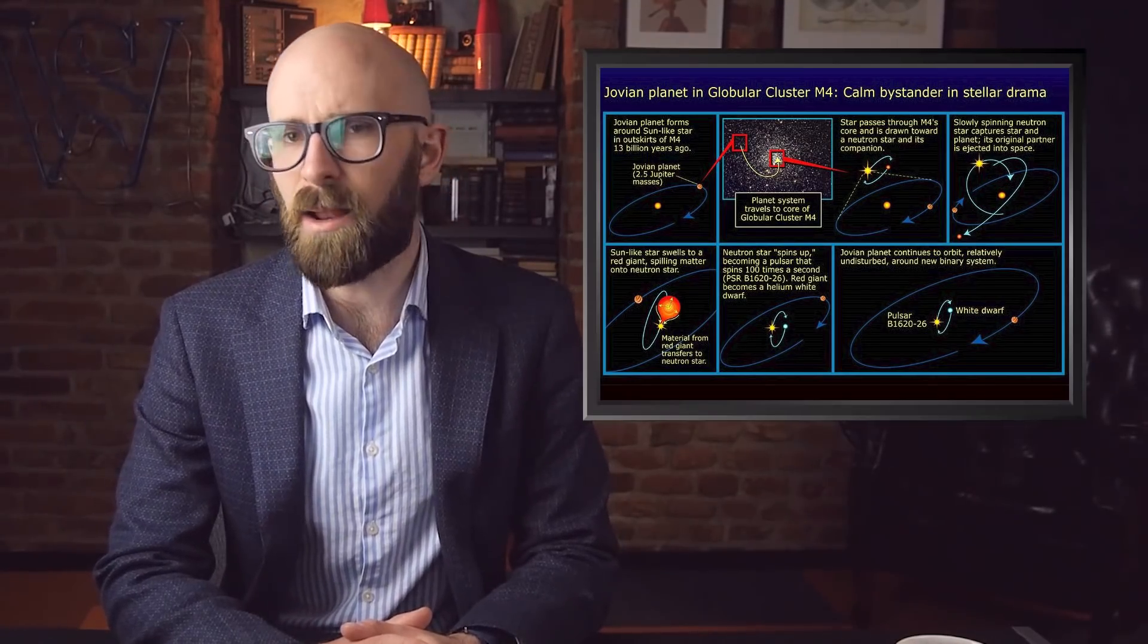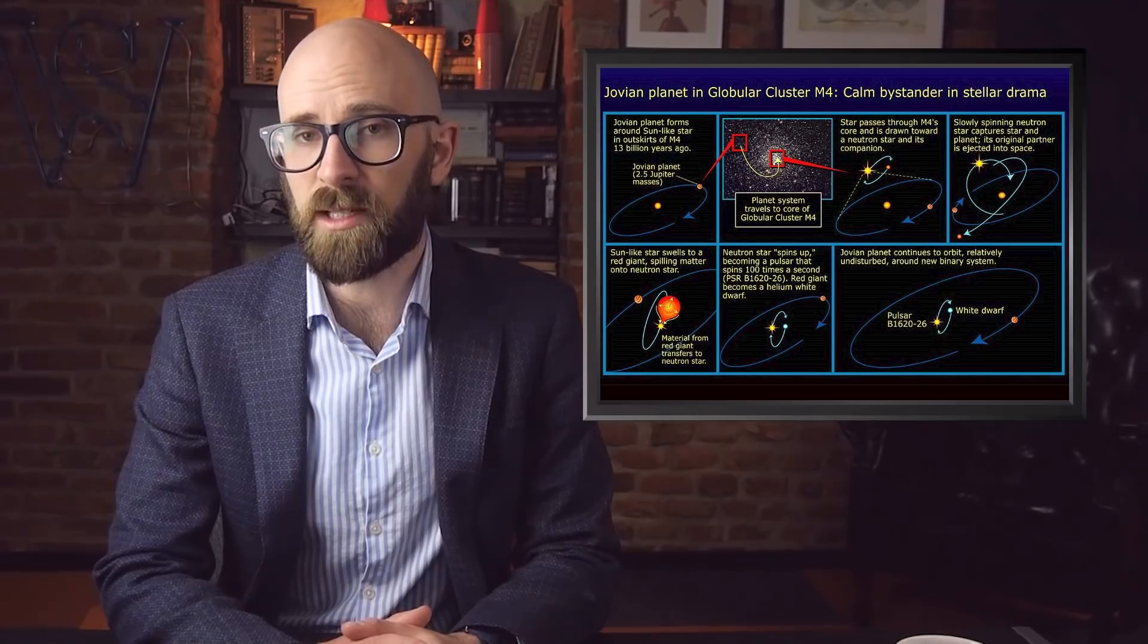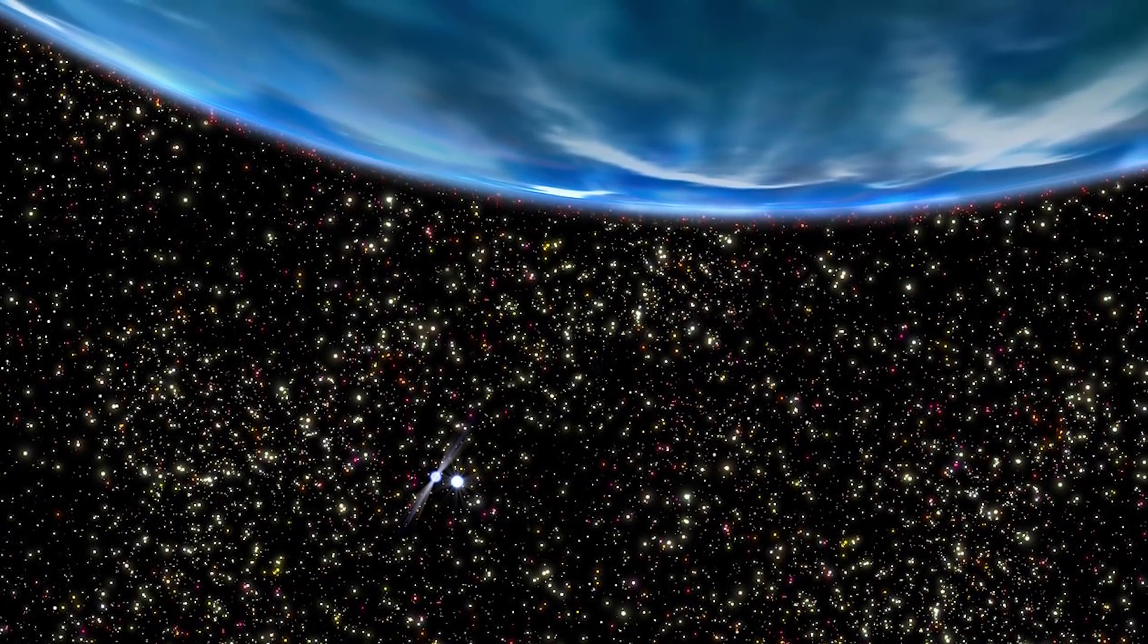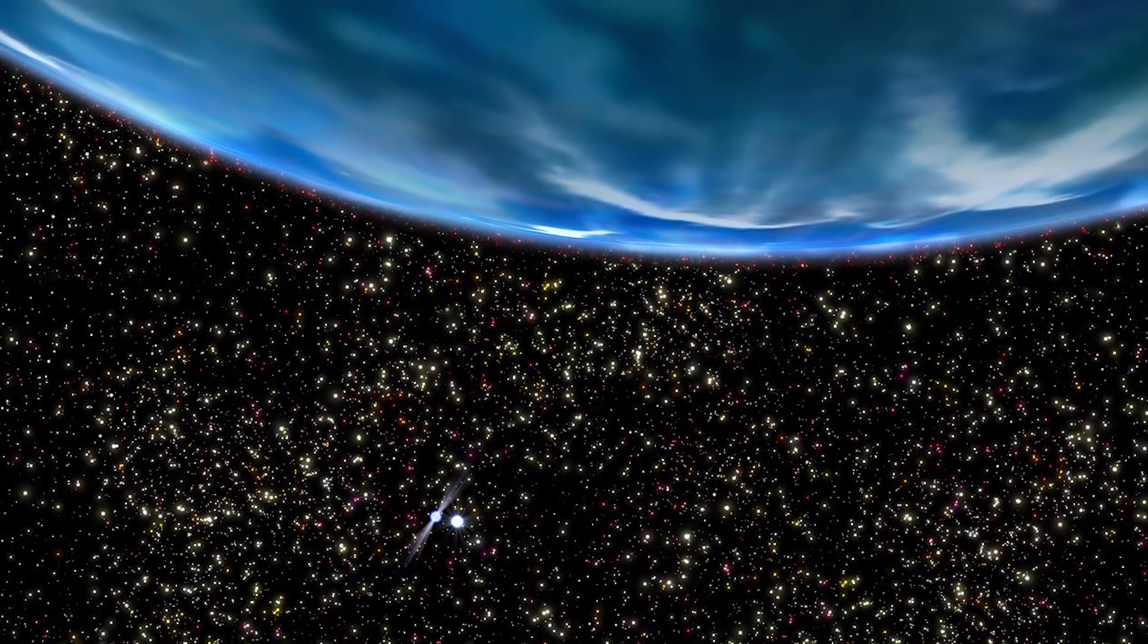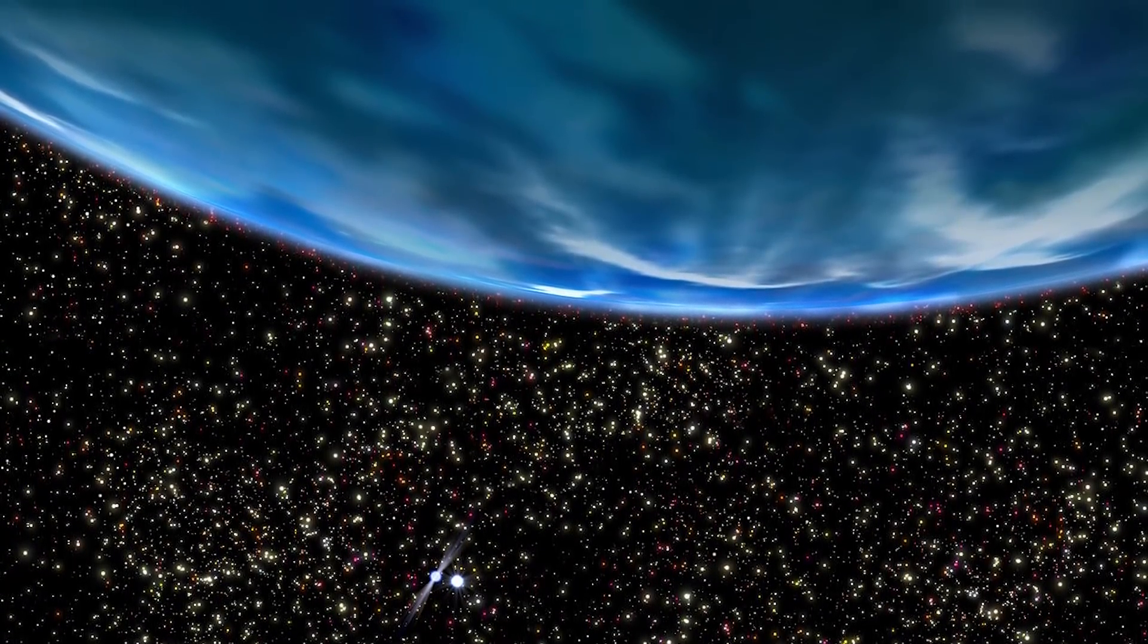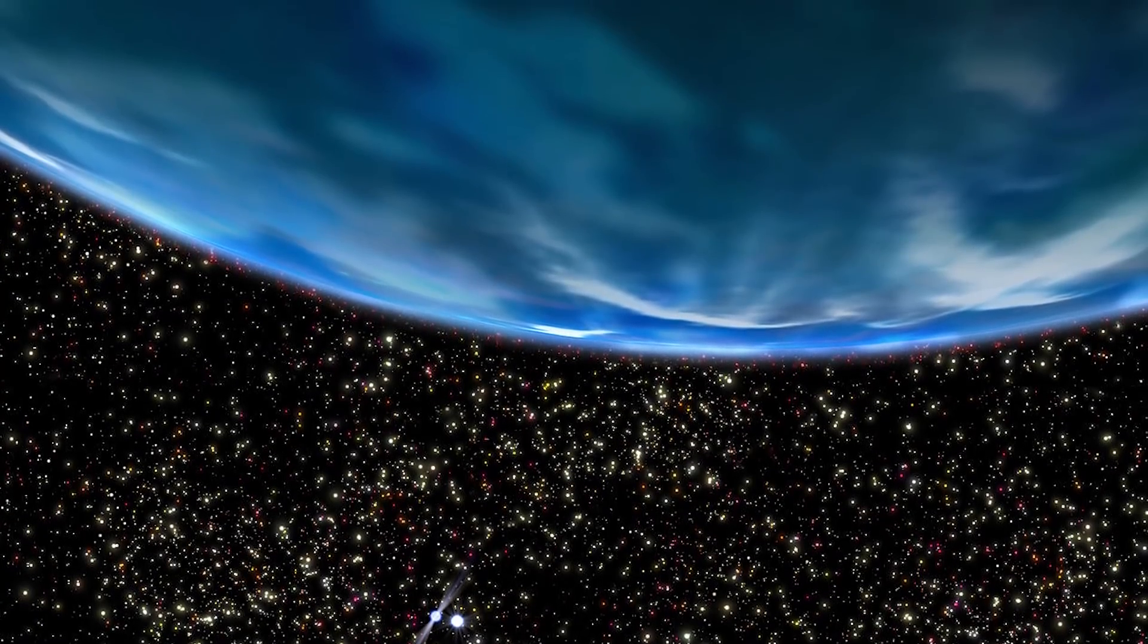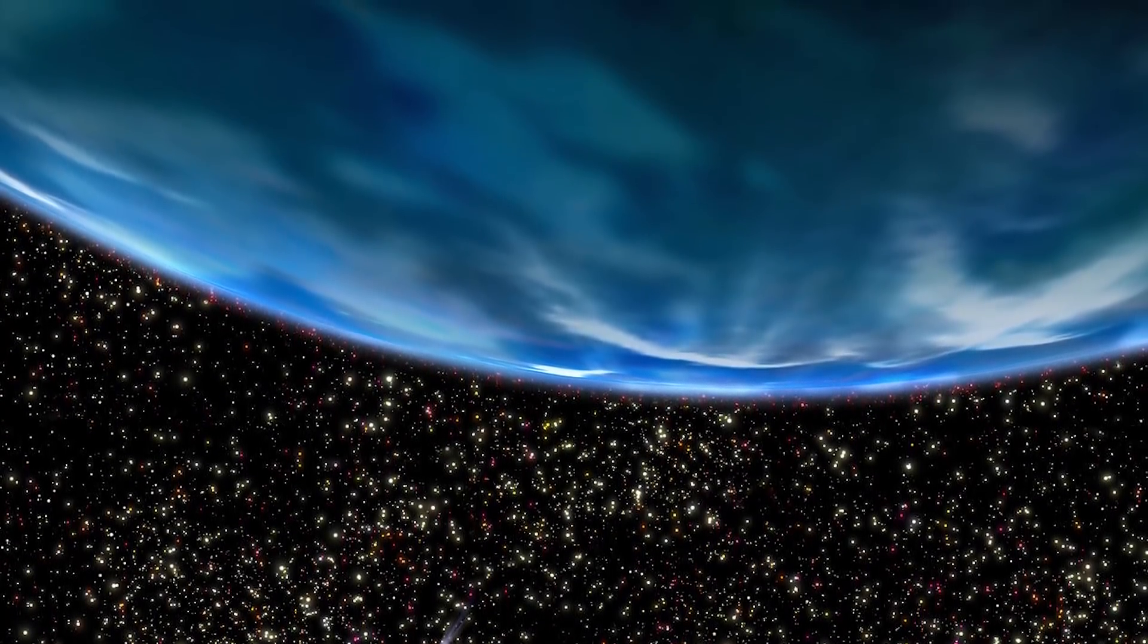It's believed to be 13 billion years old, having been formed when the universe was just 1 billion years old. For some perspective, the Earth itself is 4.5 billion years old. This older planet is about three times as old as the Earth itself and orbits a pair of burned out stars in a cluster of 100,000.